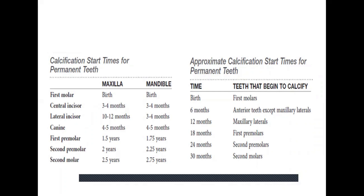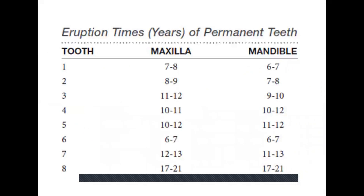These timelines are very important and must be remembered. For eruption of permanent teeth — teeth are numbered 1 to 8 — the central incisor (tooth 1) erupts in the mandible at 6 to 7 years, the lateral incisor at 7 to 8 years, the canine at 9 to 10 years, the first premolar at 10 to 12 years, the second premolar at 11 to 12 years, the first molar at 6 to 7 years, the second molar at 11 to 13 years, and the third molar at 17 to 21 years.